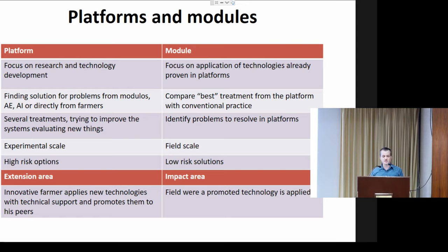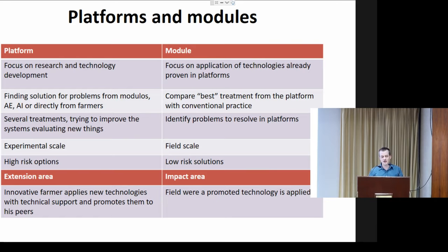We can try higher-risk options — new treatments we don't know will work, but since it's a scientific trial we can take the risk. In the modules, the focus is on applying already proven technologies. We compare the best treatment from the platform — not necessarily the highest yield, but what the farmer likes best — with conventional practice. In modules, on field scale in farmers' fields, new problems arise that we can then address in the research platforms, while we work with low-risk options to avoid crop failure.